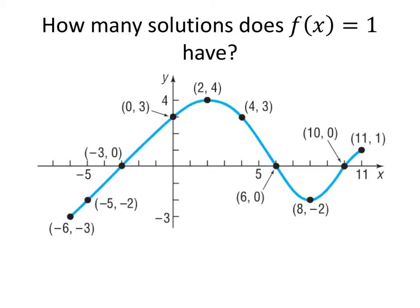One last example. How many solutions does the equation f(x) = 1 have? Another way to ask this question is, how many points on this graph have a y-coordinate of 1? Well, at first, it might seem that the answer is only one point, because we only see one of these ordered pairs that has a 1 in its y-coordinate. However, there are a couple other points that have a y-coordinate of 1. They're just not listed explicitly.